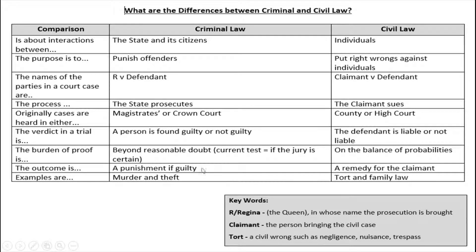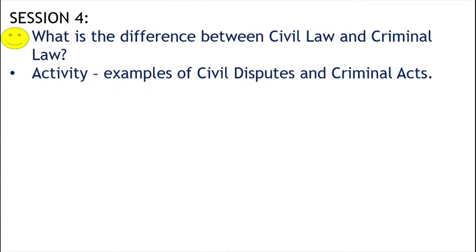The outcome in a criminal case is a punishment if guilty. The outcome in a civil case is a remedy for the claimant — a way of putting right the wrongs that exist, usually through compensation. Examples of criminal offences are murder and theft; examples of civil disputes are tort and family law. What is required is that you know the definitions of both, how they differ, what kinds of cases go to which courts, and be able to give examples of criminal acts and civil disputes. In this session we have covered the difference between civil and criminal law, and we'll now move on to an activity.